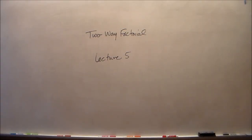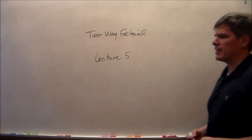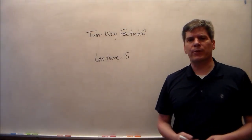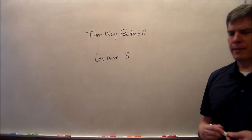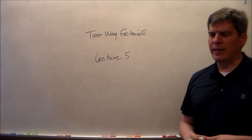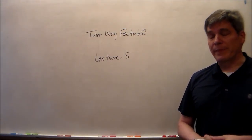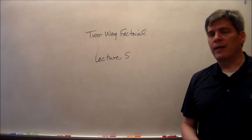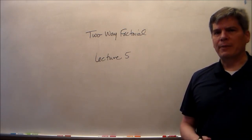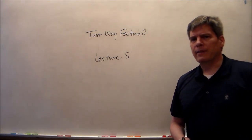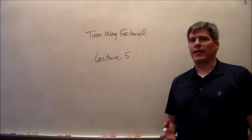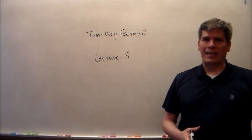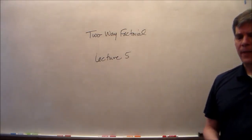Welcome to lecture five, where we start looking at two-way analysis of variance — in this case, we're doing it with factorials. Two-way indicates that there are going to be two independent variables. Up until this point, we've looked at one-way ANOVA, where the 'one' indicates one independent variable.